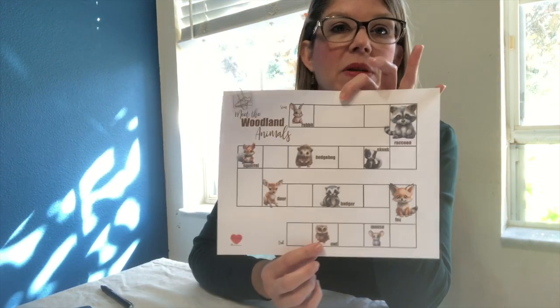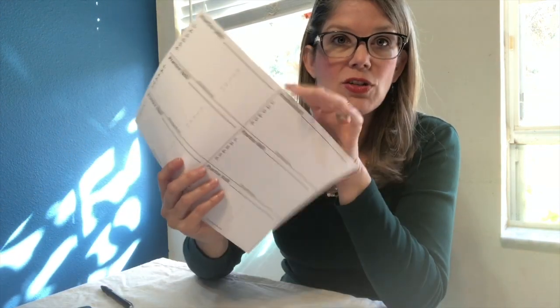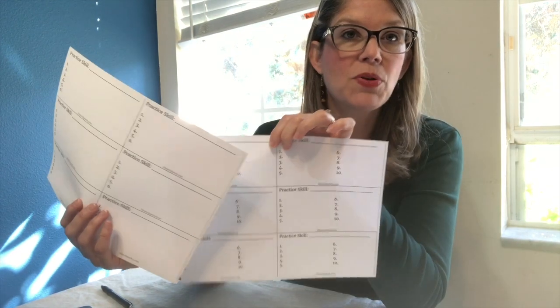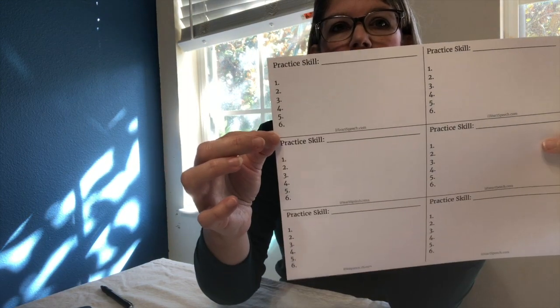I'm thinking about a couple of different kiddos that I'm going to be seeing tomorrow and I'm planning ahead what I'm going to be working on. The first thing I did was I picked my game. This week we're going to be playing the Meet the Woodland Animals game, which is available for you to print and play. It's a dice game so I have two different printables — a six number practice skill page and a ten. I won't need the ten right now so I'm going to put that off to the side.